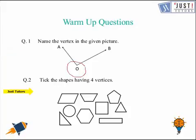We need to tick the shapes that are having four vertices, that are four corners. So, the first one, the second one, then the square and then this rectangle. These are the four pictures that are having four vertices.